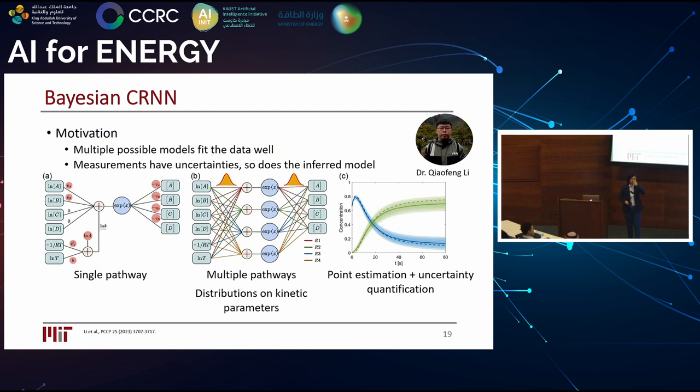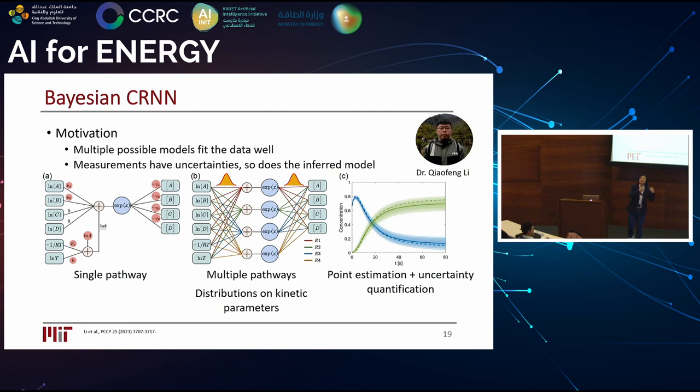We recently added a Bayesian component to the framework. The motivation is that the ground truth is one solution the neural network can give, but it's not guaranteed to be the only one — given data precision and availability, there could be multiple models that fit the data well. In real experiments we always have noise, so it's important to estimate the uncertainty associated with the machine-learned model and how that uncertainty propagates when using the model for predictions.